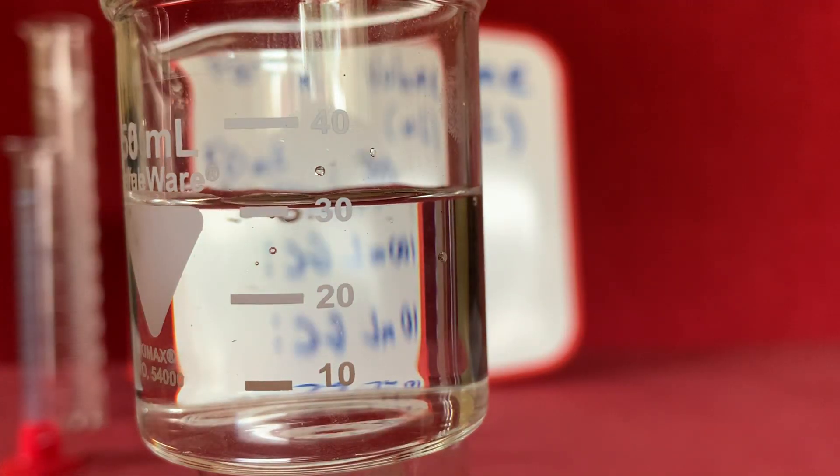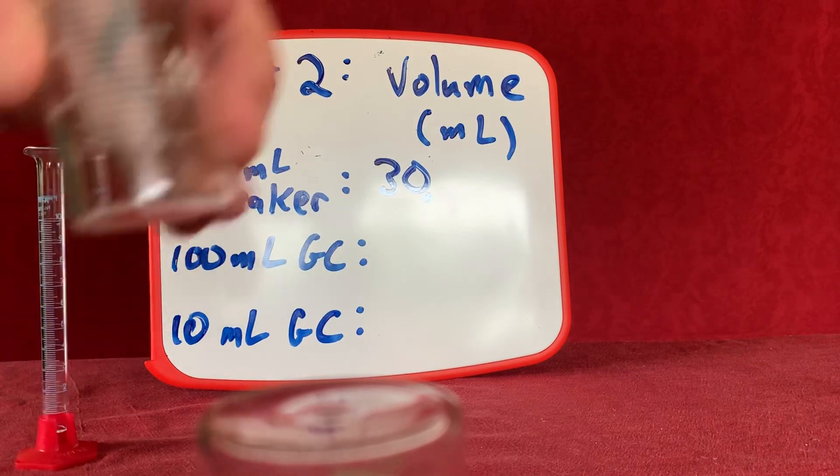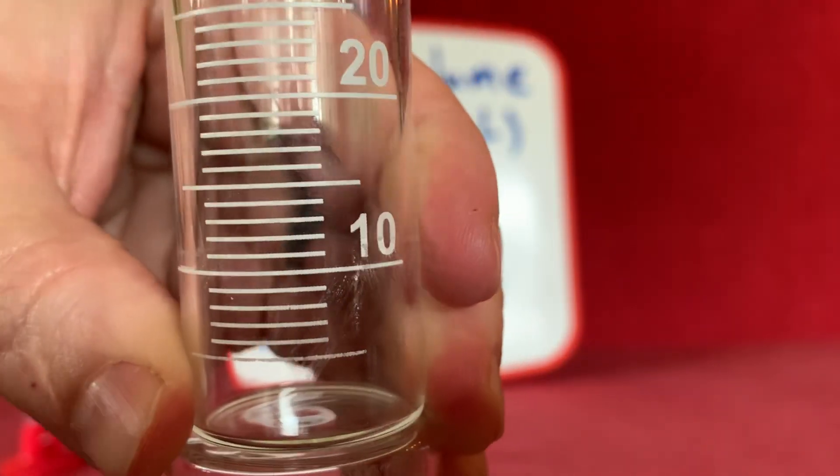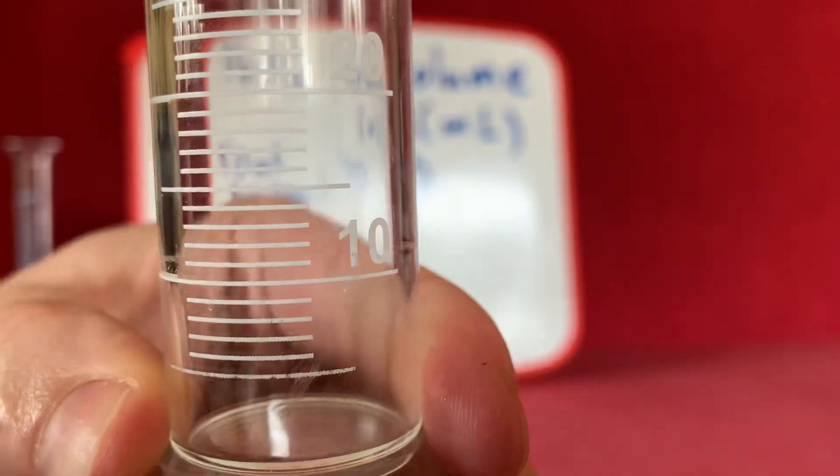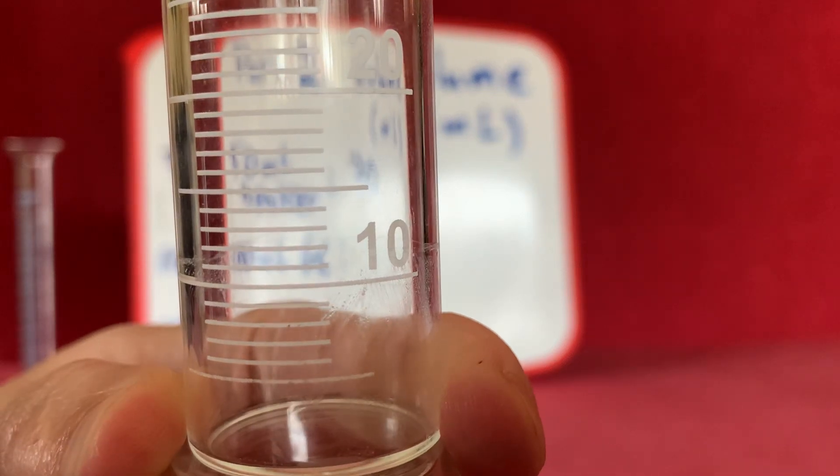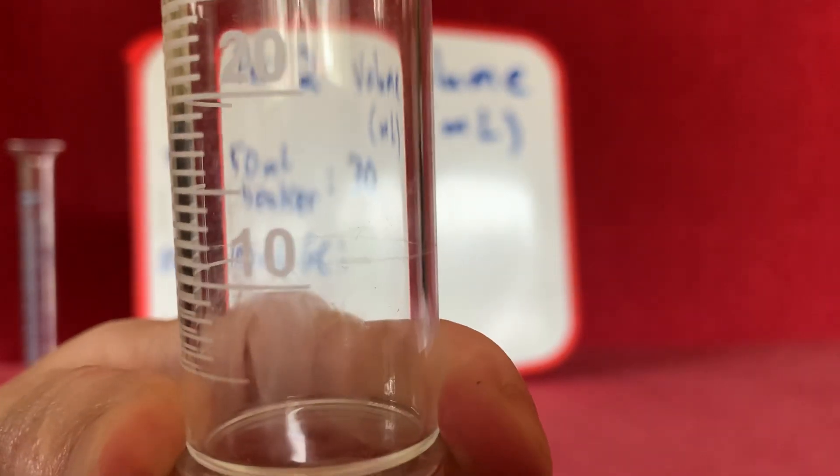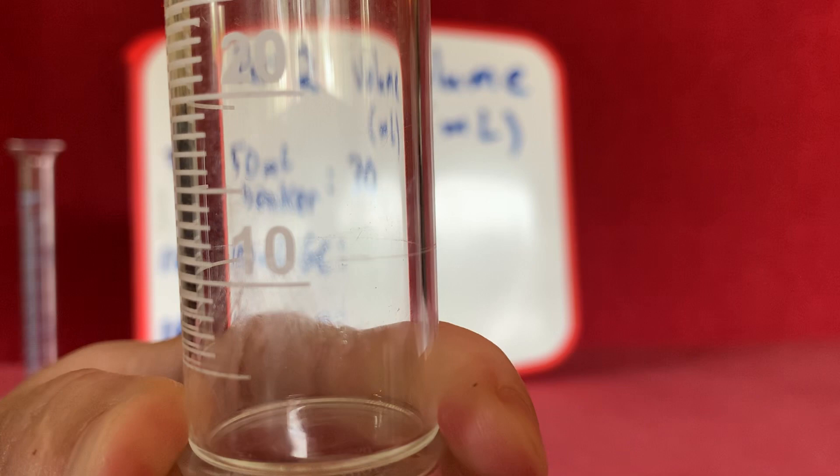We're going to take some of this water and transfer it into our 100 milliliter graduated cylinder. Specifically we want to transfer about 9 milliliters. So here you can see our graduated cylinder and I'm going to add 9 milliliters.